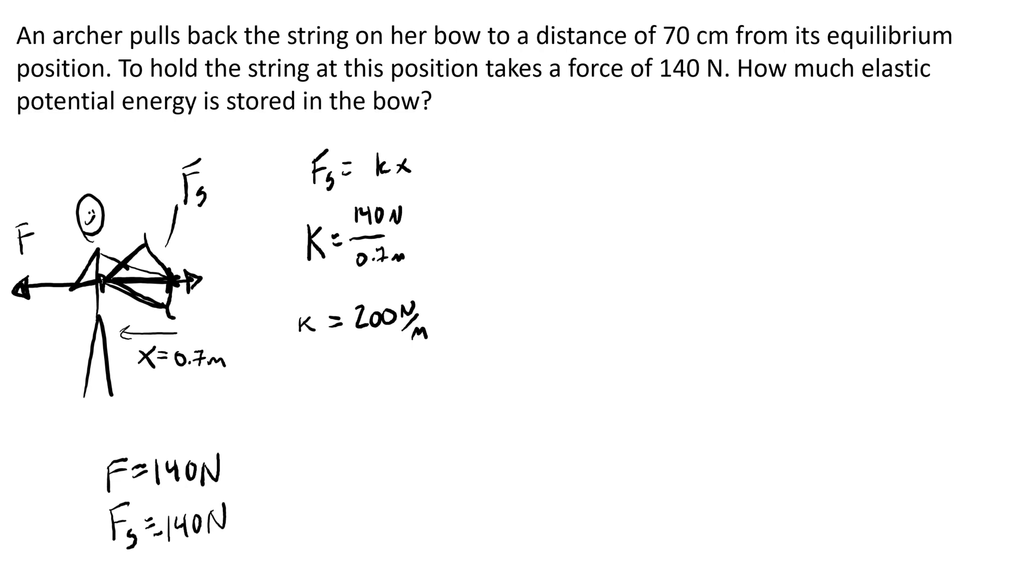Okay, so that's the spring constant, K. To figure out the elastic potential energy, then, we just need one-half of KX squared. So, half of K, 200 newtons per meter, times the amount that stretched, 0.7 meters squared, is going to be 100 times 0.7 squared, which is 0.49. Giving us a total of 49 joules. So that's the potential that's stored in the bow.